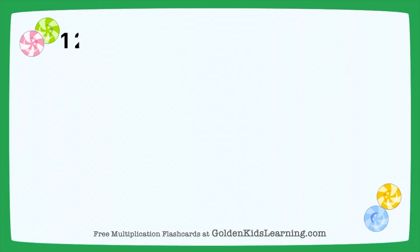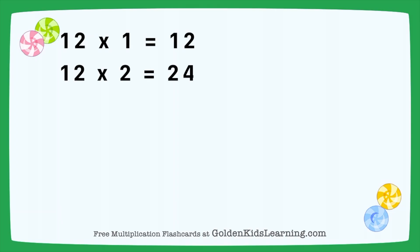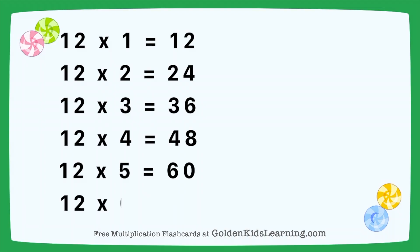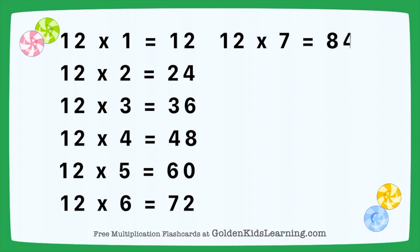12 times 1 equals 12. 12 times 2 equals 24. 12 times 3 equals 36. 12 times 4 equals 48. 12 times 5 equals 60. 12 times 6 equals 72. 12 times 7 equals 84.